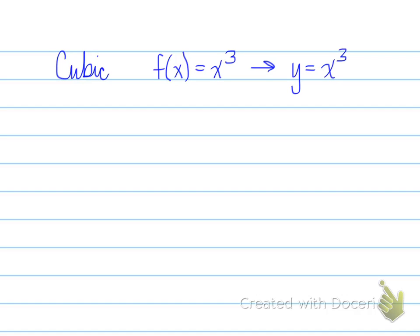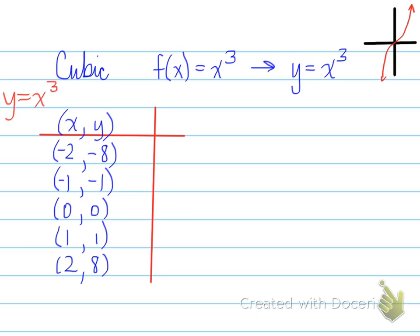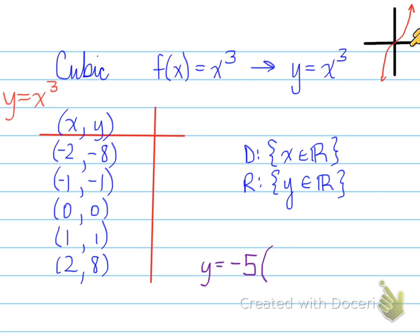Next graph is the cubic. The cubic function — I'm going to draw an x and y axis — looks like this. Our cubic function has the same x values we've been using all along. Now we look at the y values by cubing each x value: negative 8, negative 1, 0, 1, and 8. The domain is x belongs to real, and the range is y belongs to real. In this case it looks very much like the linear function, which also has the same domain and range.